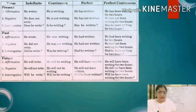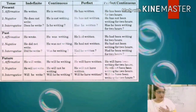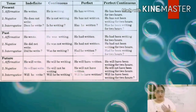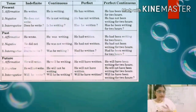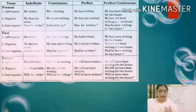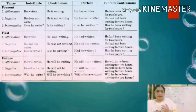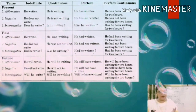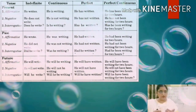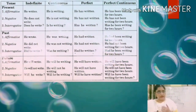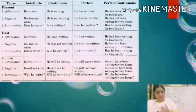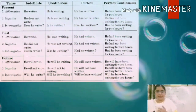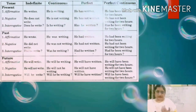In negative sentences, as you know, we use 'no' or 'not.' So in present indefinite negative, it becomes 'he does not write.' In present continuous negative, 'he is not writing.' In present perfect negative, 'he has not written.' And in present perfect continuous negative, 'he has not been writing for two hours.'